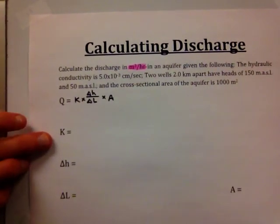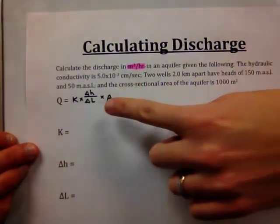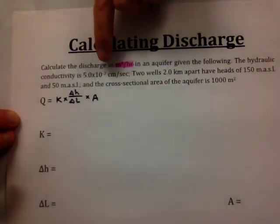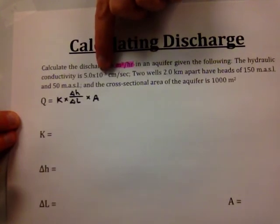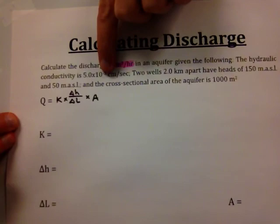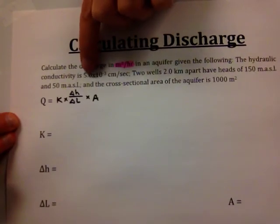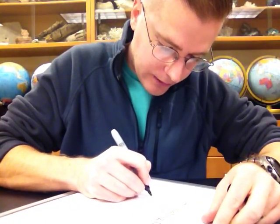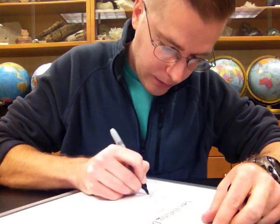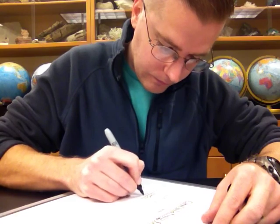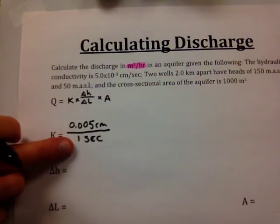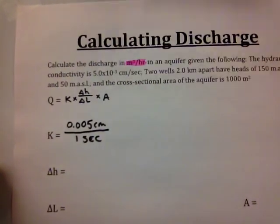Let's start with K. We're told the hydraulic conductivity is 5.0 times 10 to the minus third centimeters per second. In scientific notation, minus 3 means move the decimal point three places to the left, giving us 0.005 centimeters per second. I'll write it as a fraction — 0.005 centimeters over one second — because we need to change the units to meters and hours.